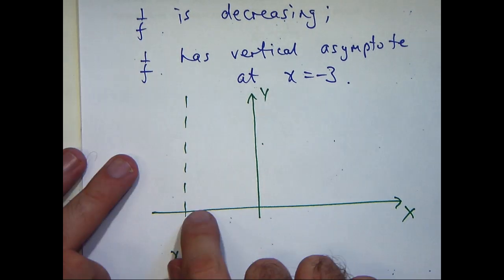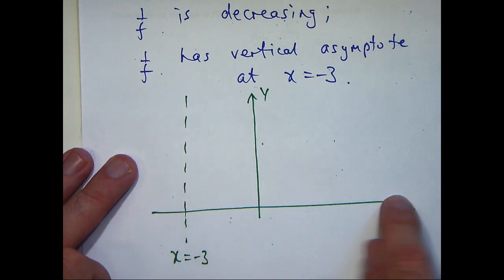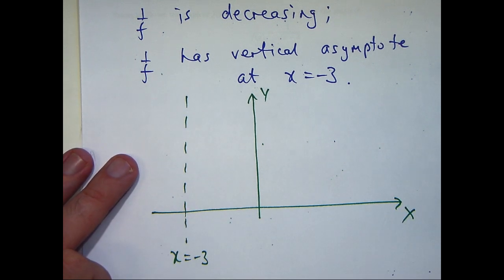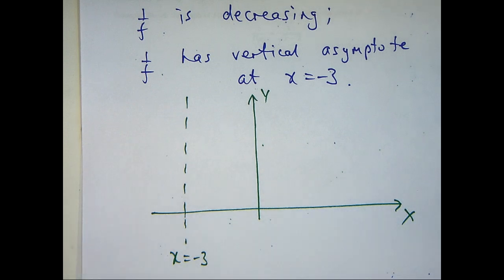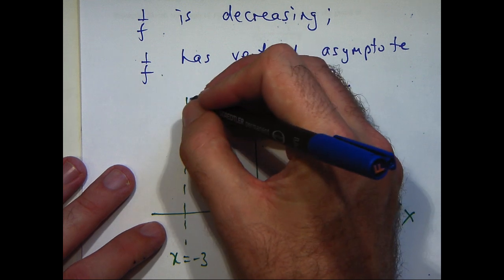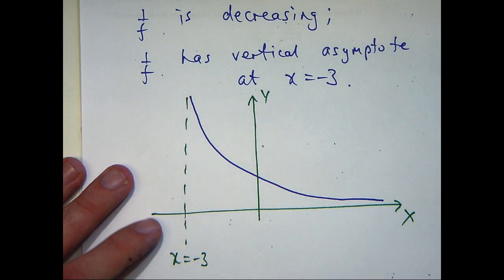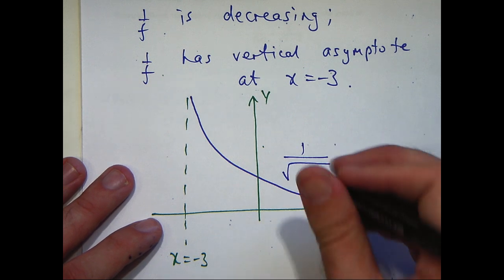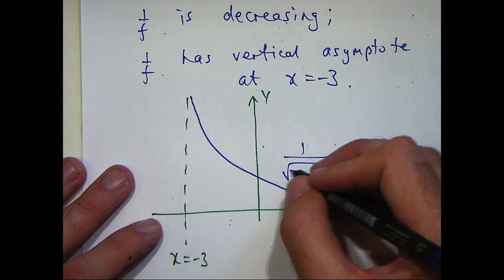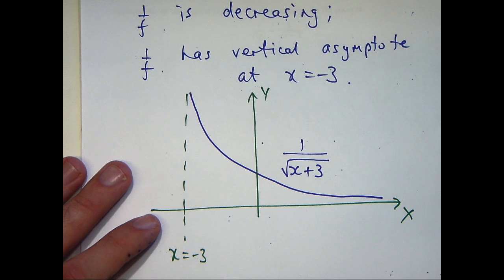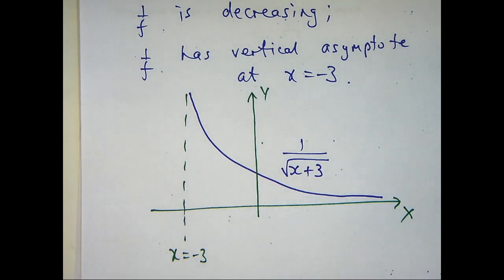So here I'm drawing in the vertical asymptote x equals minus 3. So we want the domain of 1 on f here, not including the point x equals minus 3. The graph will be positive and decreasing. So it should look something like this. Okay, so that's that simple problem done.